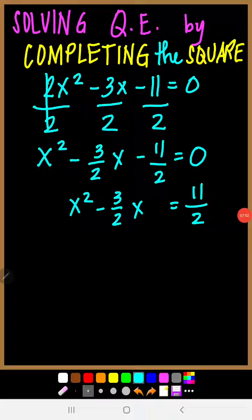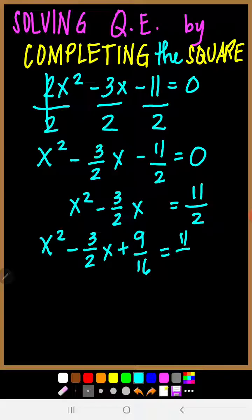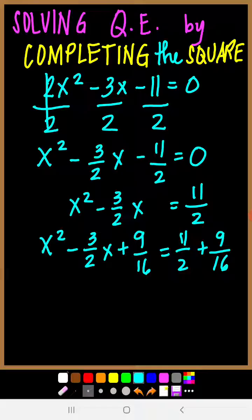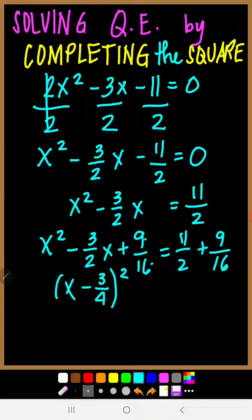So we add 9 over 16 to both sides: x squared minus 3 over 2x plus 9 over 16 equals 11 over 2 plus 9 over 16. After adding, the left side becomes the perfect square binomial x minus 3 over 4, squared. The technique is to take the square root of 9 and the square root of 16. For the right side, 11 over 2 plus 9 over 16 equals 97 over 16.